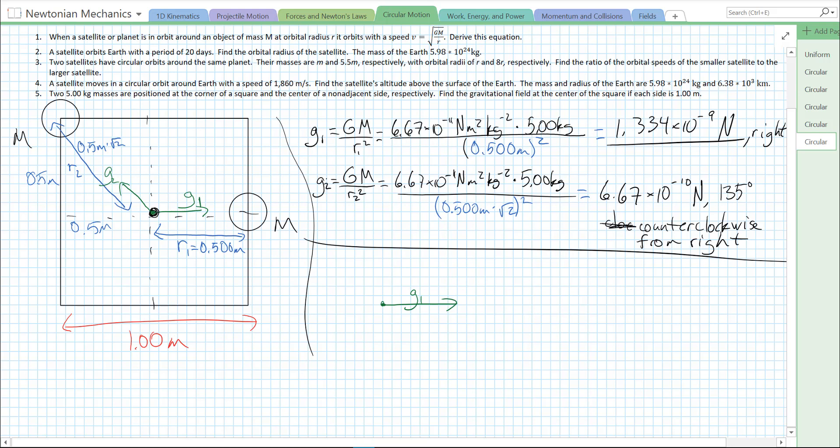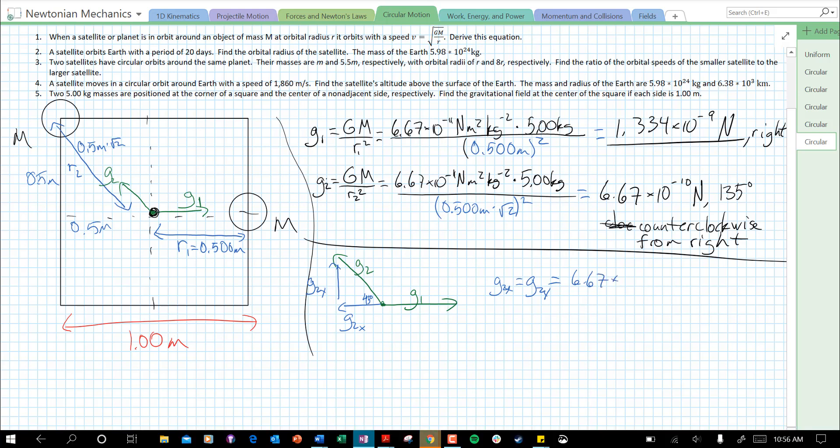But G2, we need to break into G2x and G2y. Since it points at an angle of 45 degrees, it's also going to form a 45-45-90 triangle with its components. So, that implies that G2x, the magnitude of G2x, is the same as the magnitude of G2y, which is just the hypotenuse over root 2. So, 6.67 times 10 to the minus 10 newtons over root 2.